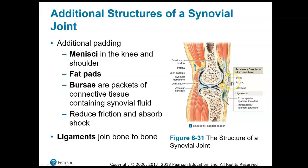People get bursitis, or inflammation of the bursa, which is common in the shoulder, elbow, and knee. Bursa are packets of connective tissue containing synovial fluid — they reduce friction and absorb shock. The knee also has several ligaments, including the anterior and posterior cruciate ligaments, which form a cross. The menisci — singular meniscus — are triangular sections of tough fibrocartilage that provide stability. There are also fat pads for shock absorption, and many ligaments for stability.